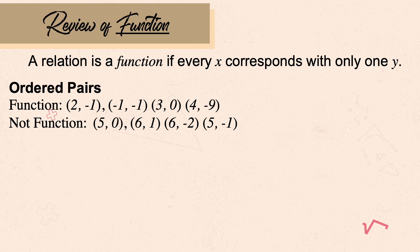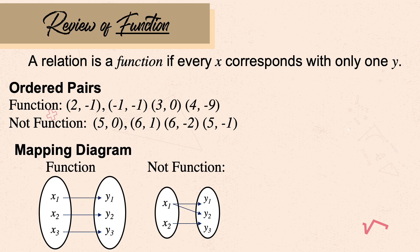That is the first method: identifying the domain. The rule is no repetition of domain. The second method of identifying if a given relation is a function is through a mapping diagram. In a function, x must have only one y. In the first diagram, for every x there is just only one y.